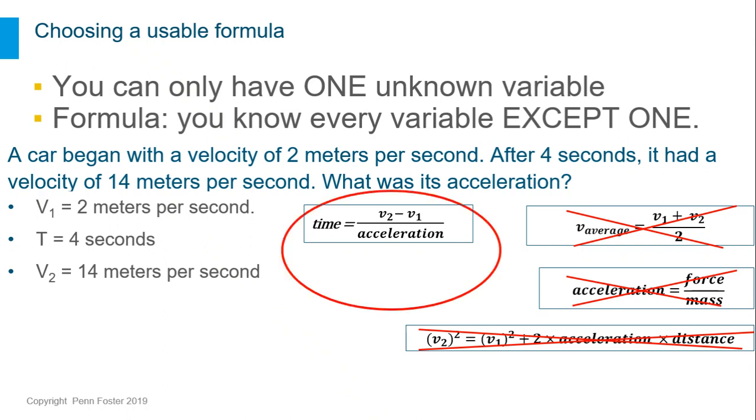The formula that will work will let you put in your known quantities, velocity 1, time, and velocity 2, leaving acceleration as the only unknown.